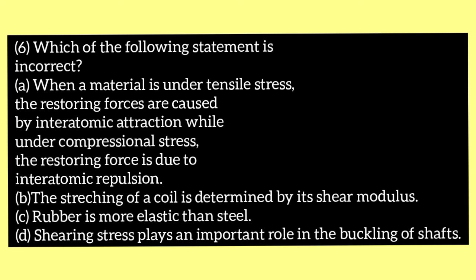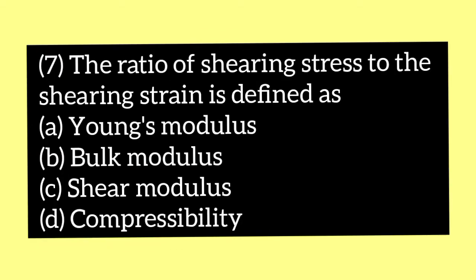Next question: which of the following statements is incorrect? Option A when a material is under tensile stress the restoring forces are caused by interatomic attraction, while under compressional stress the restoring force is due to interatomic repulsion. Option B the stretching of a coil is determined by its shear modulus. Option C rubber is more elastic than steel. Option D shearing stress plays an important role in buckling of shafts. The answer is option C, rubber is more elastic than steel.